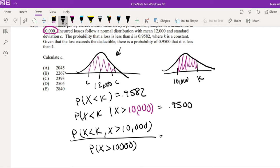So when it's X is less than K, but it's also greater than $10,000, this purple range, how do we find that? Well, we can think of it like this. We can first find the probability that X is less than K, right? So that's X is less than K.